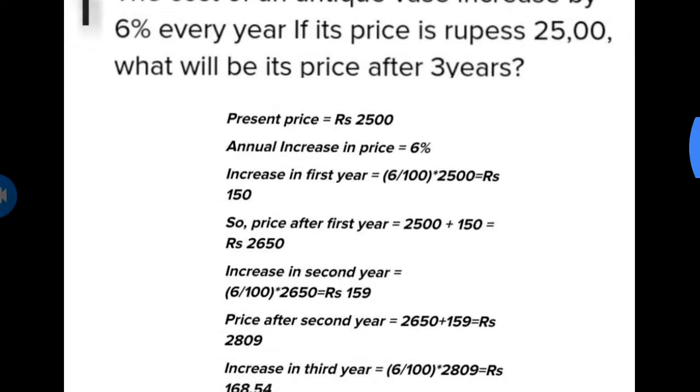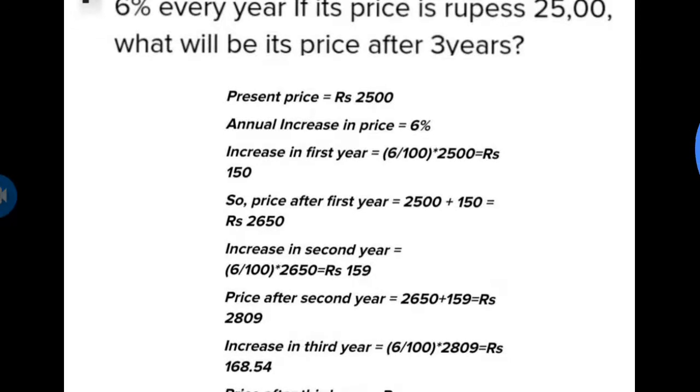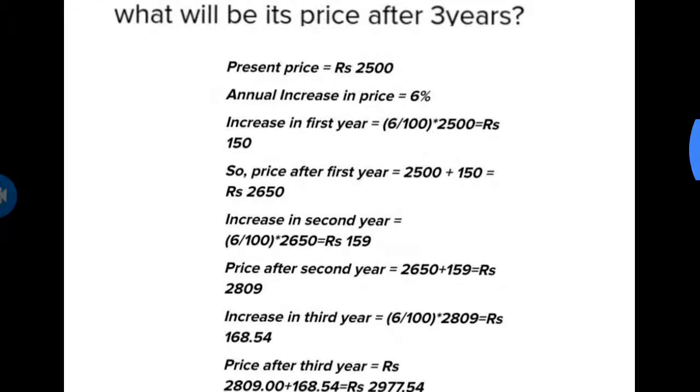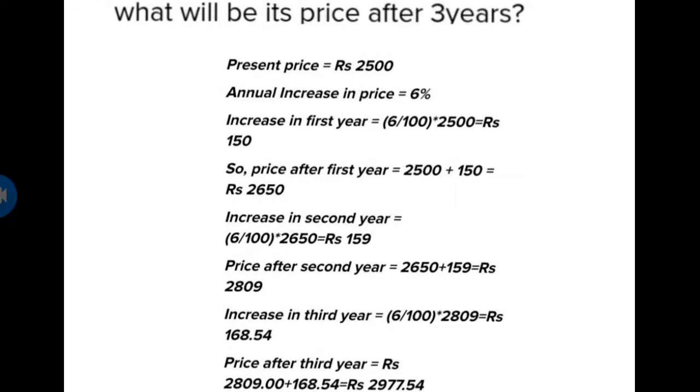Here is our answer. Present price is 2500. Annual increase in price is 6%. Increase in first year: we will calculate first year's increase, which is 6% of 2500. We have to calculate 2500 multiplied by 6 upon 100, so we will get 150. So price after first year is 2500 plus 150 equals 2650.